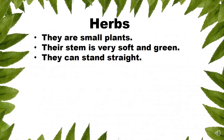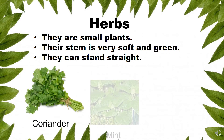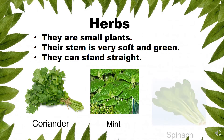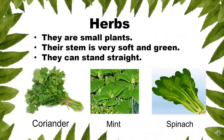Herbs — they are small plants. Their stem is very soft and green, and they can stand straight. A few examples of herbs are coriander, mint and spinach.